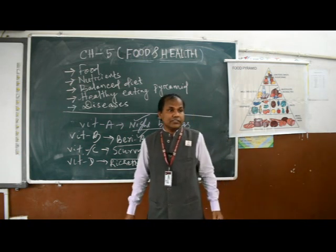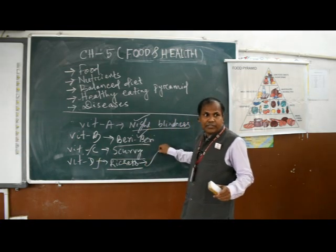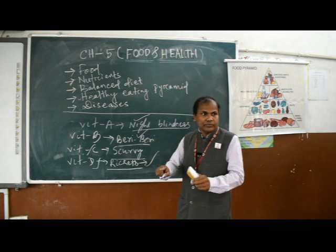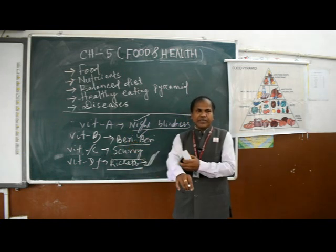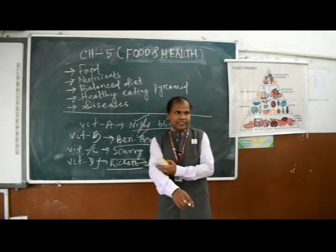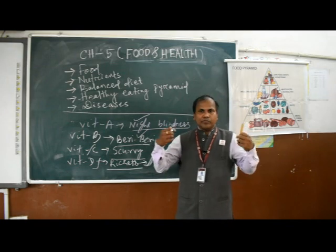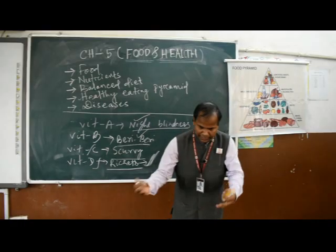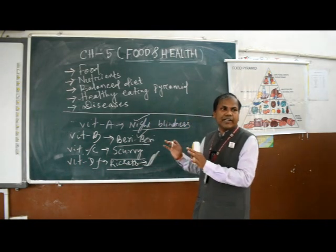Rickets is a very dangerous disease. If a child suffers from rickets, we cannot correct or rectify it — it will remain with that person throughout life, making them disabled. The bones become very weak, soft, porous, and fragile. Even falling from a small height of two or three feet can cause the bones to break due to lack of Vitamin D.